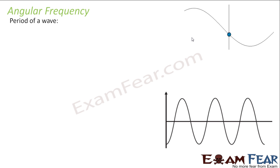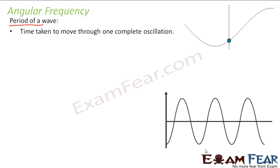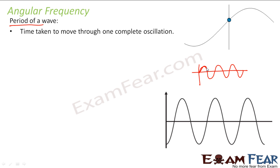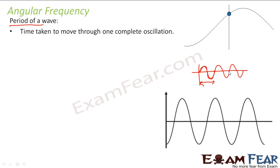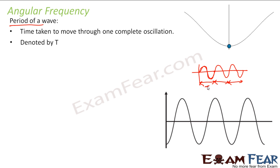What do we mean by period or time period? It is the time taken to move through one complete oscillation. If you have a wave, how much time it takes to complete one cycle — from here until the same repetition starts again — that is one cycle. The time taken to complete one cycle or one oscillation is known as time period, or period of a wave, denoted by capital T.